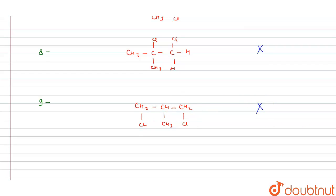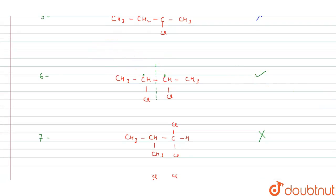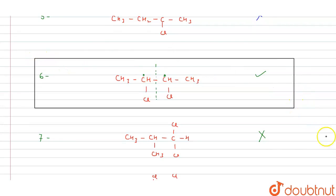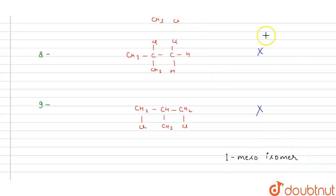So, which of the isomers of C4H8Cl2 is a meso compound? Only one molecule — CH3-CHCl-CHCl-CH3 — is the meso isomer. Therefore, the number of meso isomers is 1. This is the correct answer. Thank you.